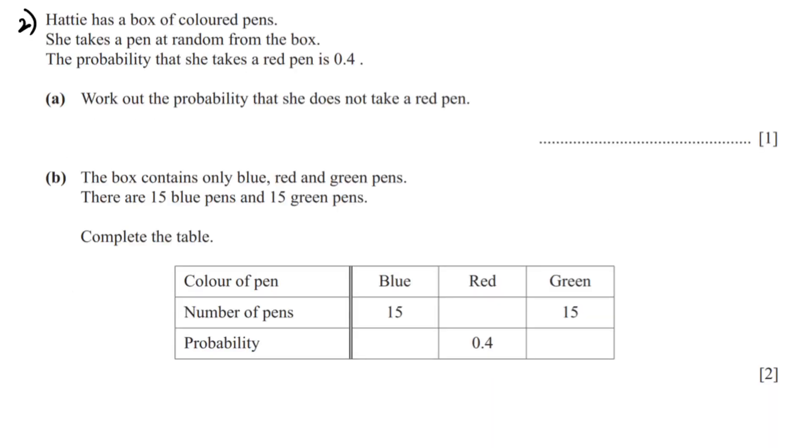Moving on to the next question. Hattie has a box of colored pens. She takes a pen at random from the box. The probability that she takes a red pen is 0.4. Work out the probability that she does not take a red pen.